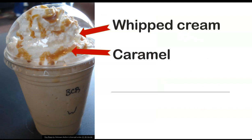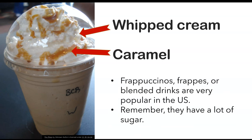One more add-on is whipped cream — that is the white topping on the coffee. Whipped cream is milk and sugar, and it's usually on ice cream or dessert. Caramel is another drizzle, which means they put it just on top to look pretty. This drink here is a very popular drink in the United States — it's called a frappuccino, or frappe, or blended drink. They're very popular especially in the summer, but they have a lot of sugar, so be careful.